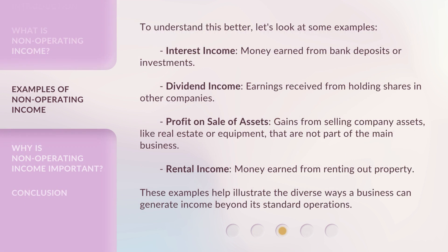To understand this better, let's look at some examples. Interest Income: money earned from bank deposits or investments. Dividend Income: earnings received from holding shares in other companies. Profit on sale of assets: gains from selling company assets, like real estate or equipment, that are not part of the main business. Rental Income: money earned from renting out property. These examples help illustrate the diverse ways a business can generate income beyond its standard operations.